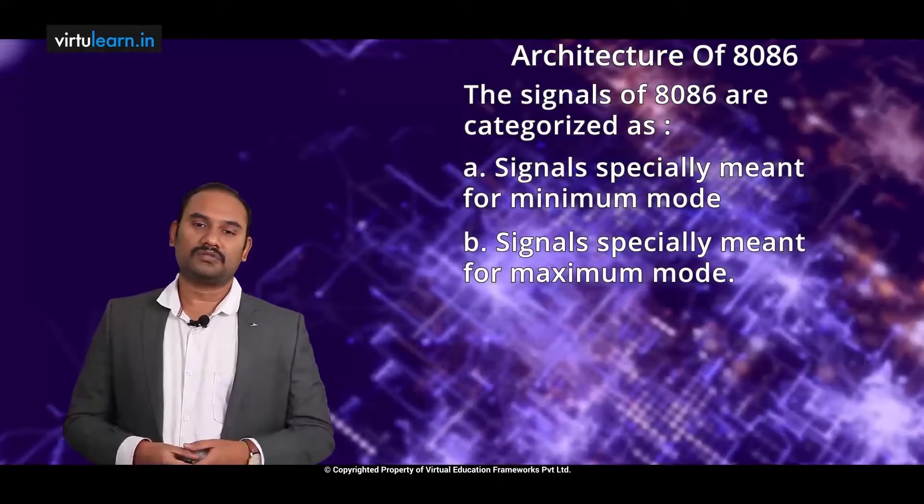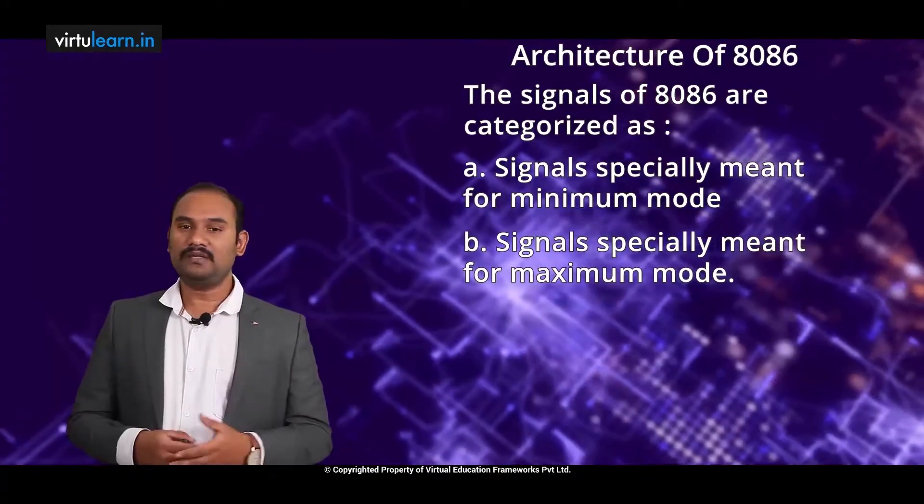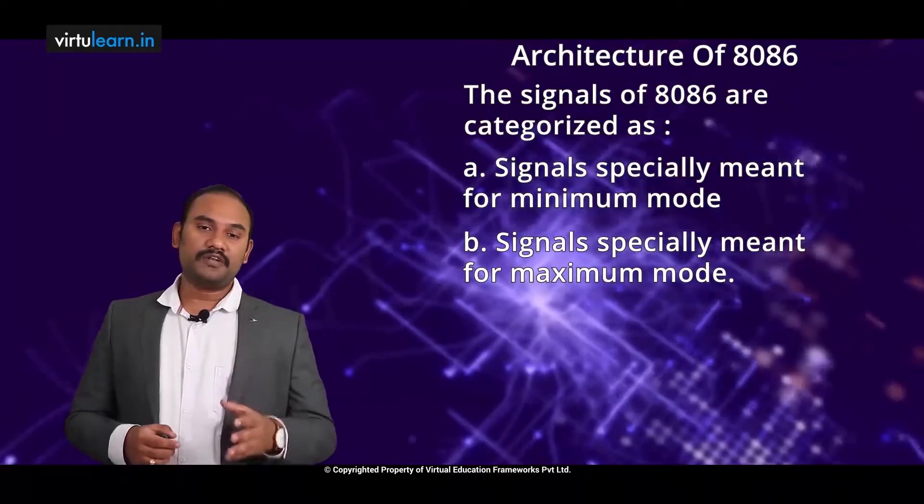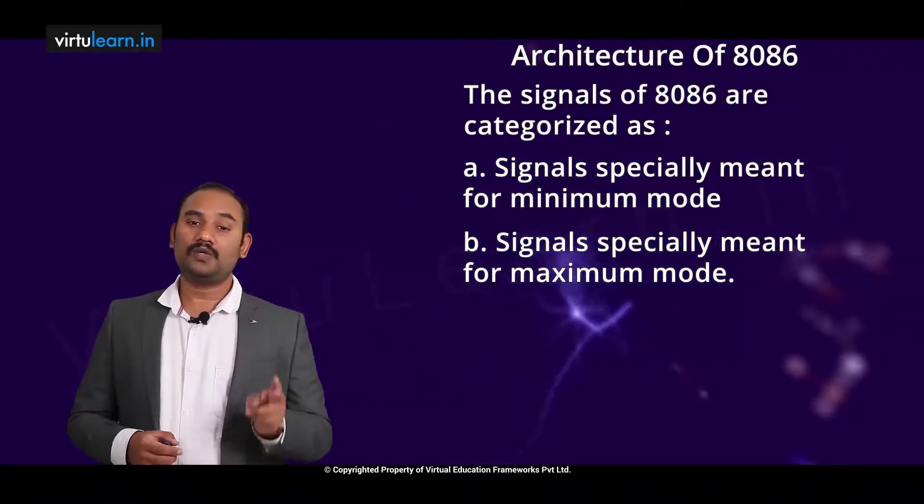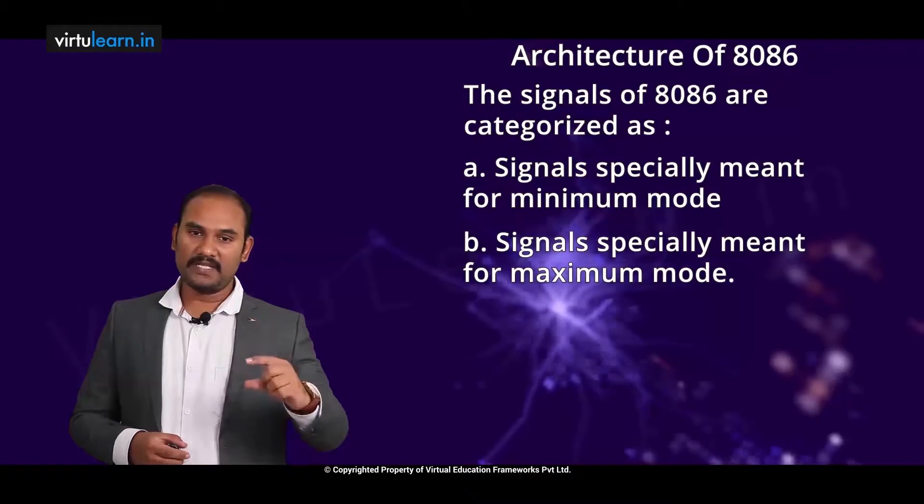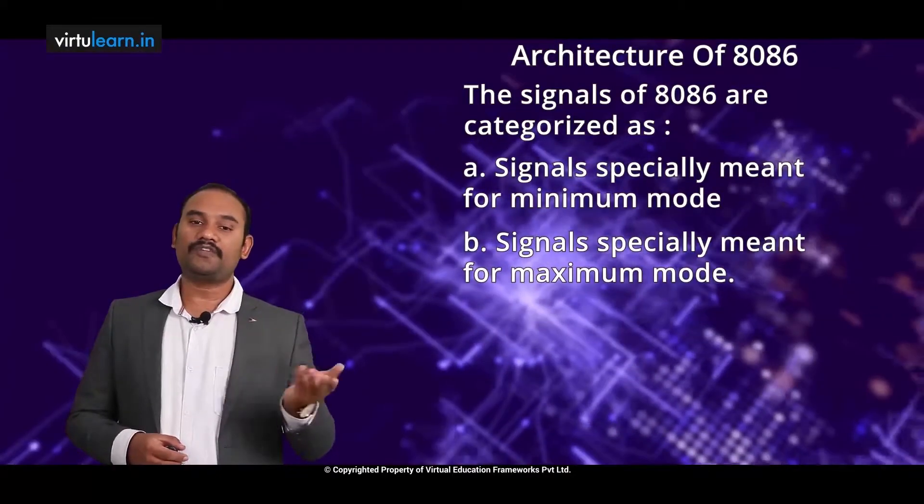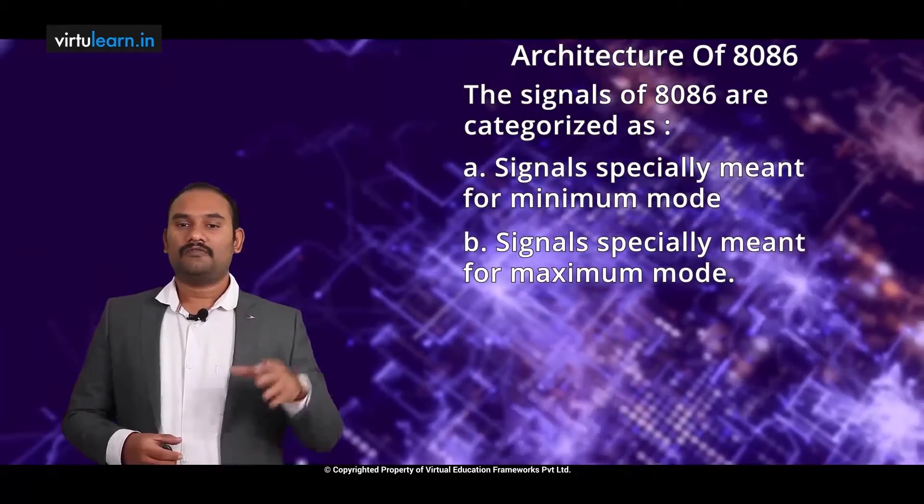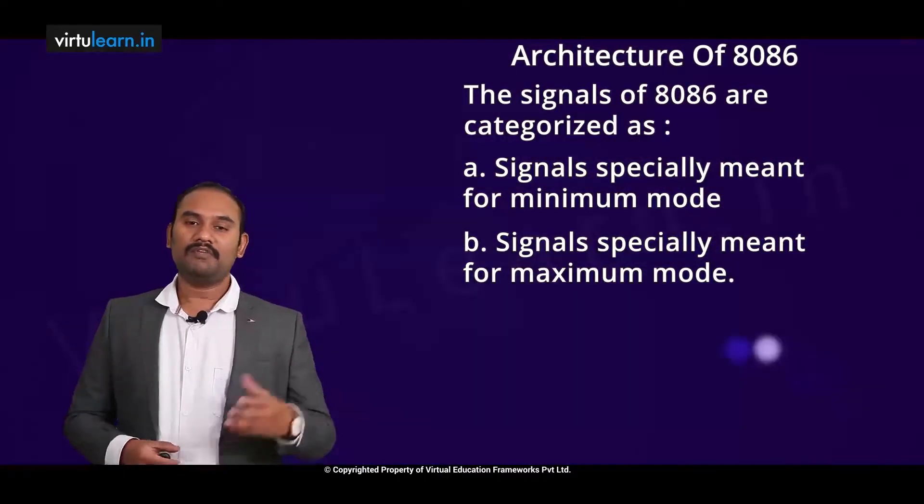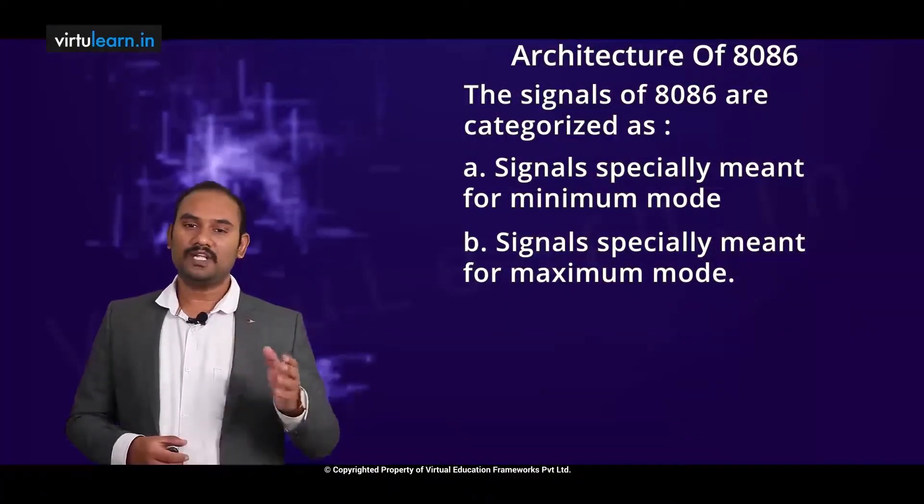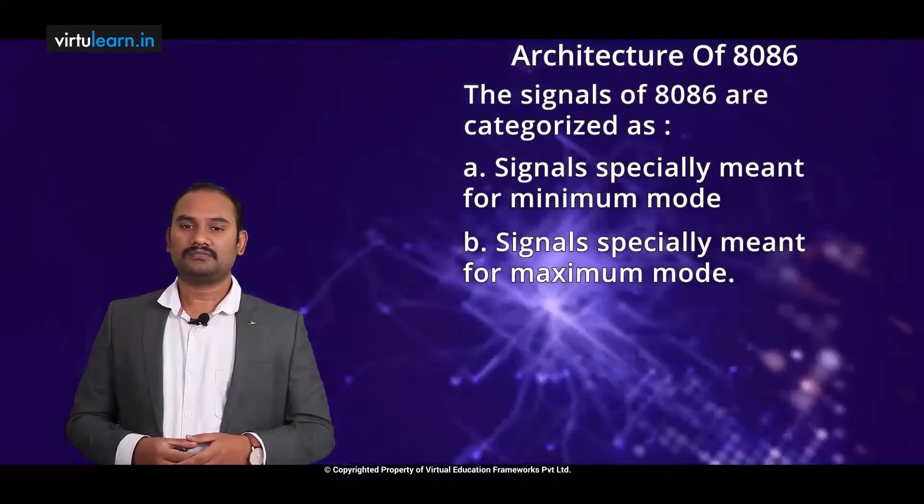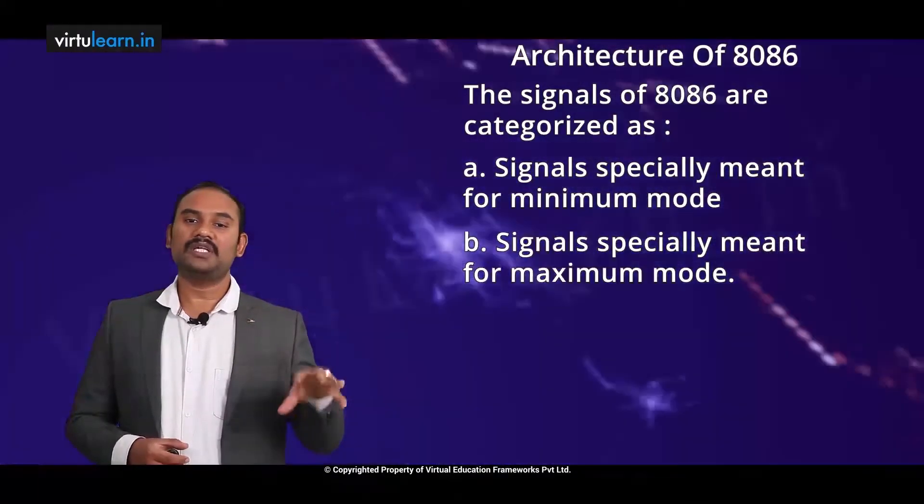This minimum and maximum mode, I just want to brief you once again. 8086 microprocessor will operate in two different modes. The same IC can operate in two different modes. First one, minimum mode. Whenever you build a system where there is only one processor, then the IC functions in minimum mode.